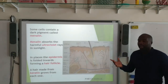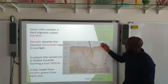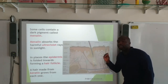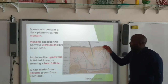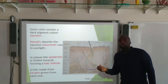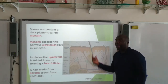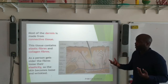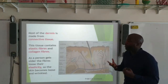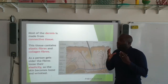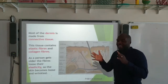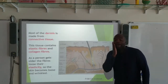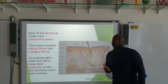In places, we have an inward fold of the epidermis, and this inward fold forms what is known as a hair follicle. In this hair follicle, a hair grows, and this hair is made from keratin, which is a protein. Moving on to the dermis — the dermis is mainly made of connective tissue, which contains elastic fibres and collagen fibres. As you get older, these fibres lose their elasticity and are not as stretchy, which is what causes wrinkles to appear on your skin as you age.